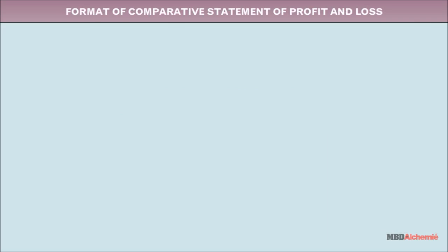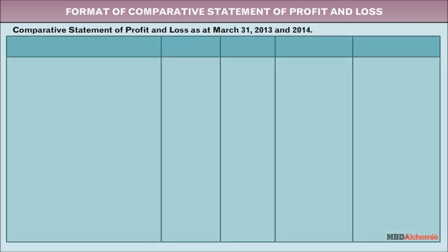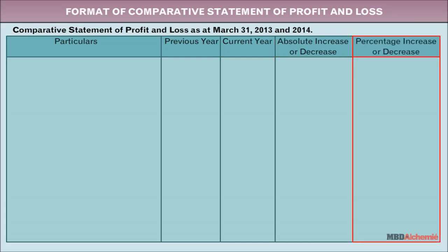The format of comparative statement of profit and loss has five columns. The first displays the particulars. The second column displays the amount of the previous year for a specific item. The third column displays the amount of the current year. The fourth column displays the absolute increase or decrease, and the fifth column displays the percentage increase or decrease for a specific item.